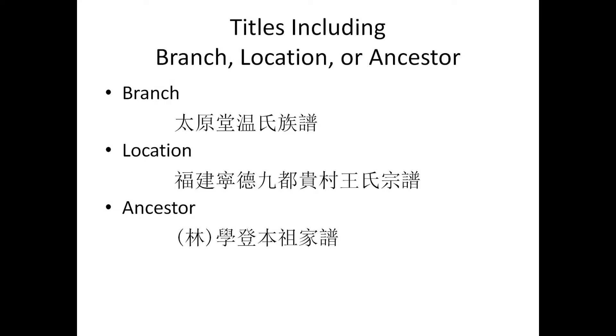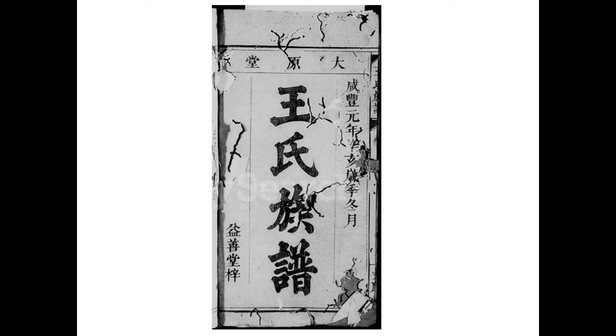Sometimes the title refers to an ancestor — 'banzu' is another term for the primogenitor ancestor. For example, a Lin or Lum genealogy referencing Shui Dung Banzu. So just looking at a title: what does it tell you? This one is a Wang Zhu Pu — a Wang genealogy. Here's another: Hunan, and it's a Tan genealogy. Below that is another Lean or Lum genealogy.